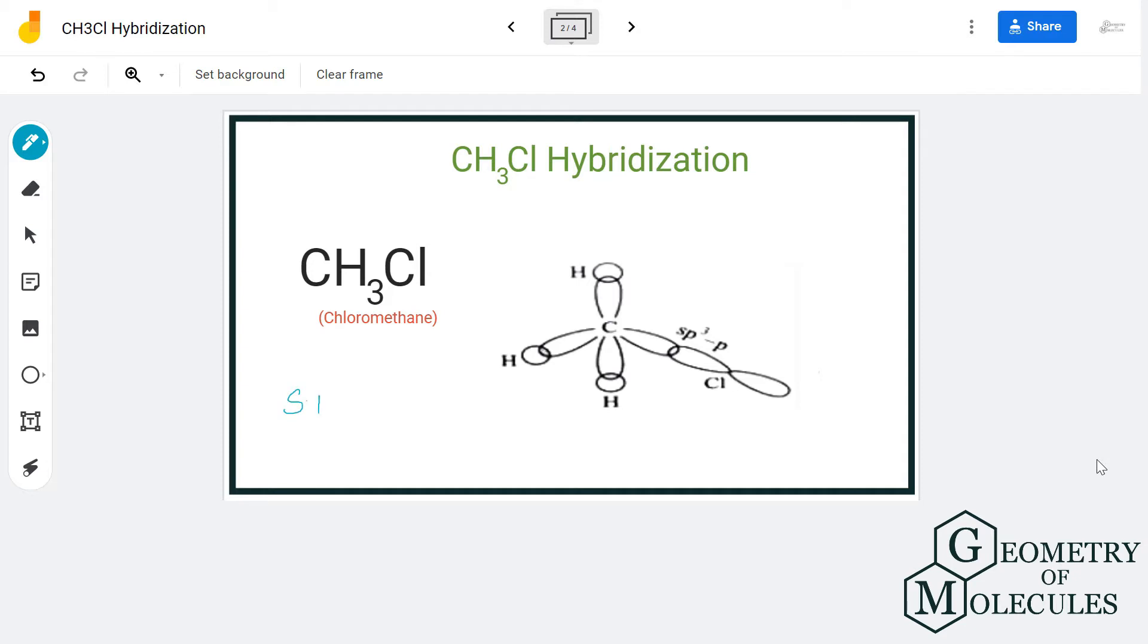So here is the Lewis structure of CH3Cl, in which carbon is forming a single bond with three hydrogen atoms and a single bond with chlorine atom.